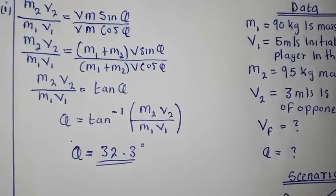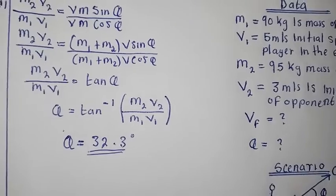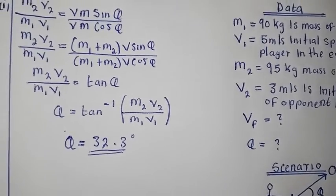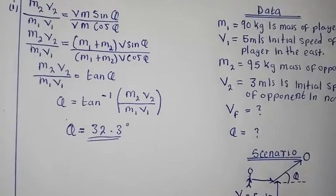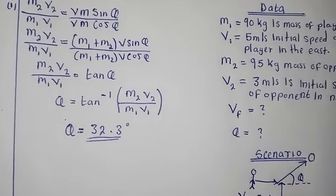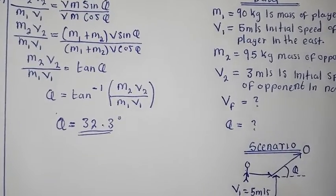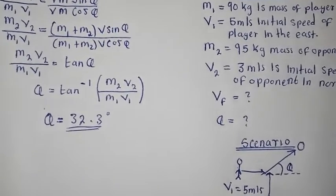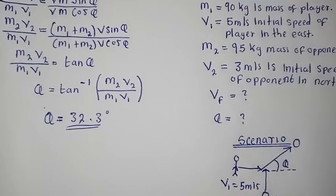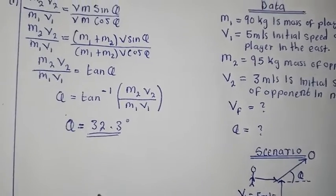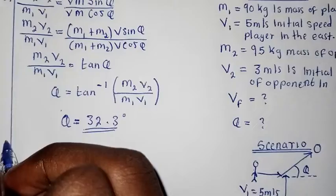Make sure that you find the same answer of 32.3 degrees. I'm giving you the formulas; you'll be putting in the values and sending them so I can see how you're going about this. We have found angle theta — now let's find the velocity.